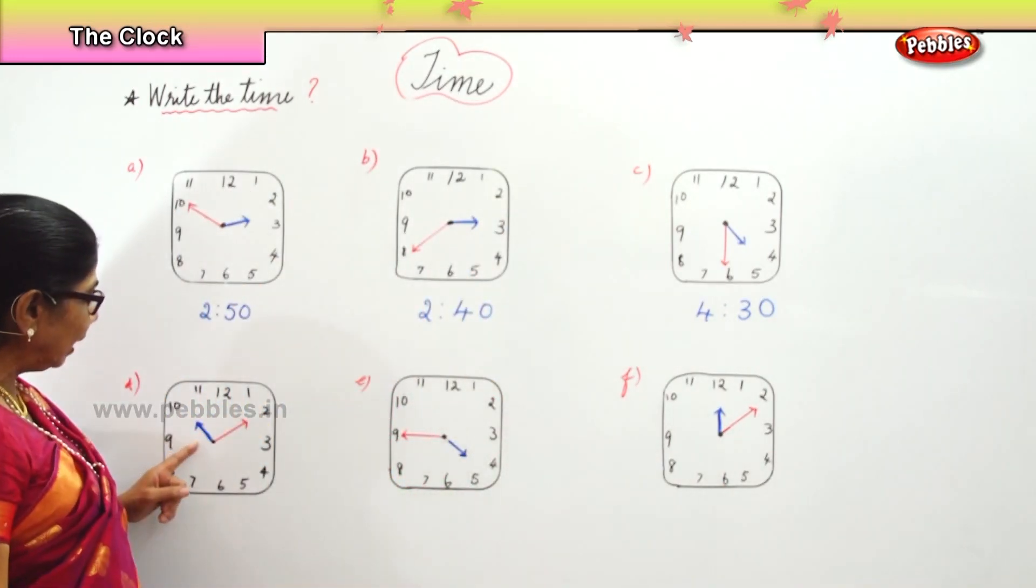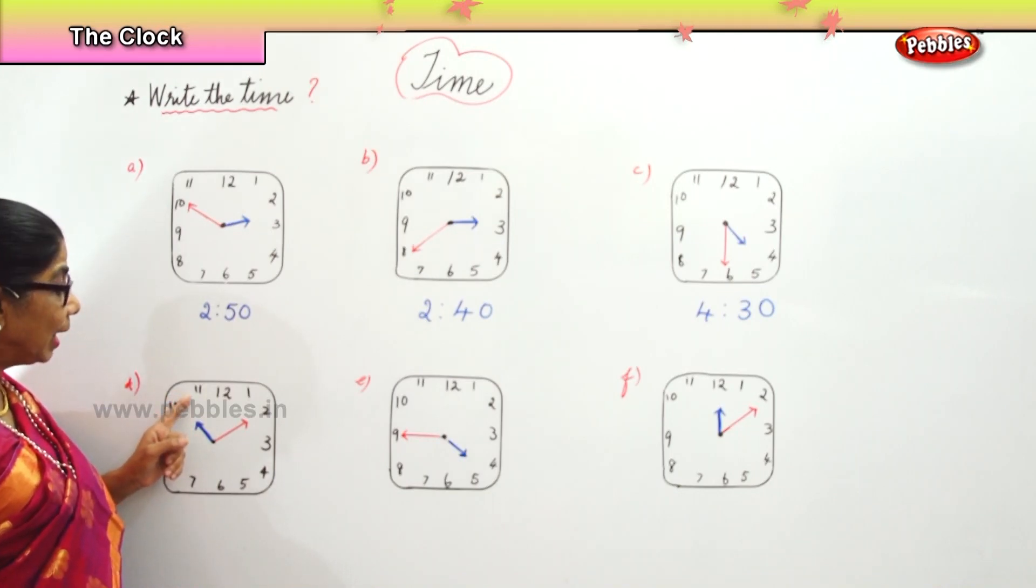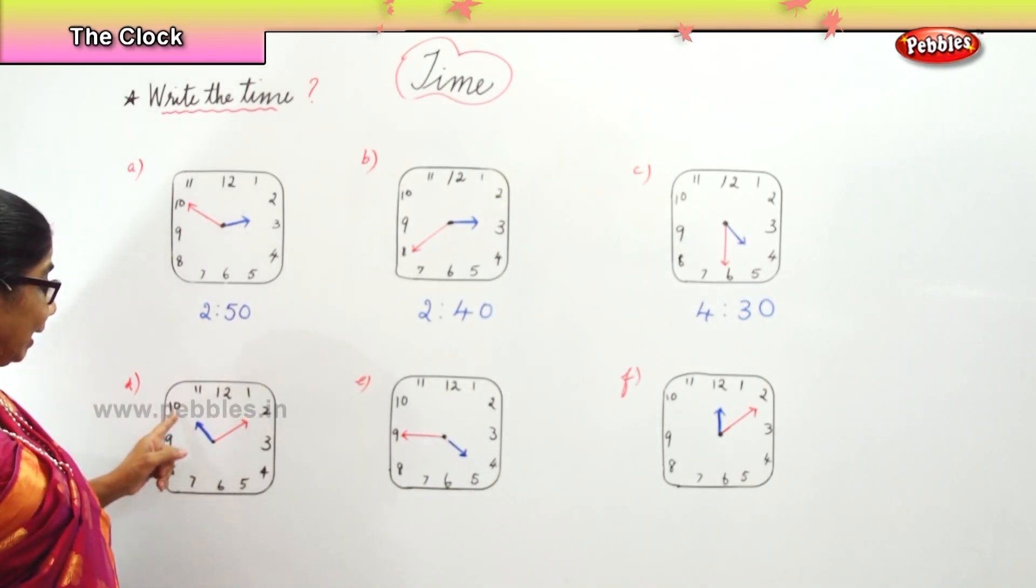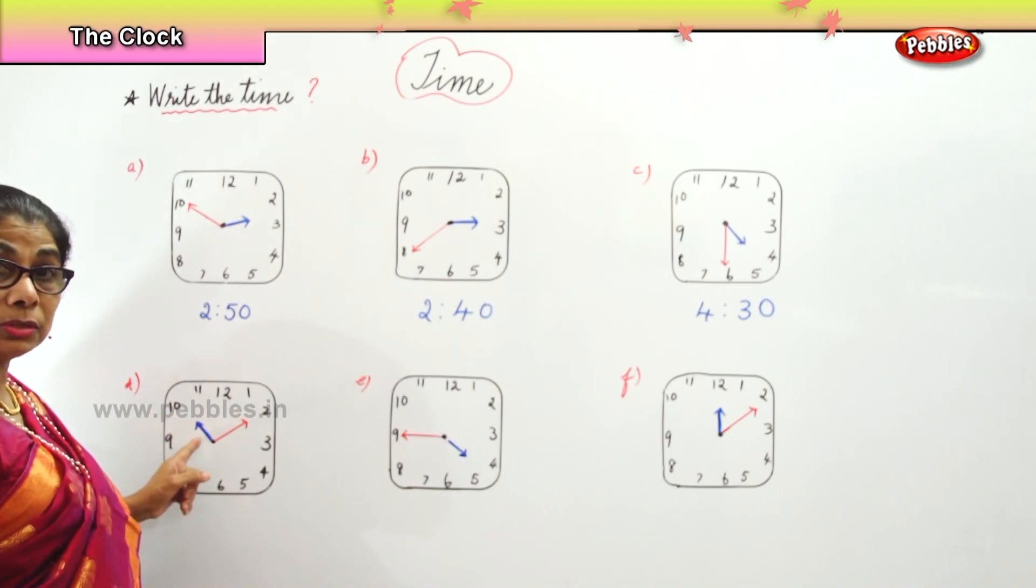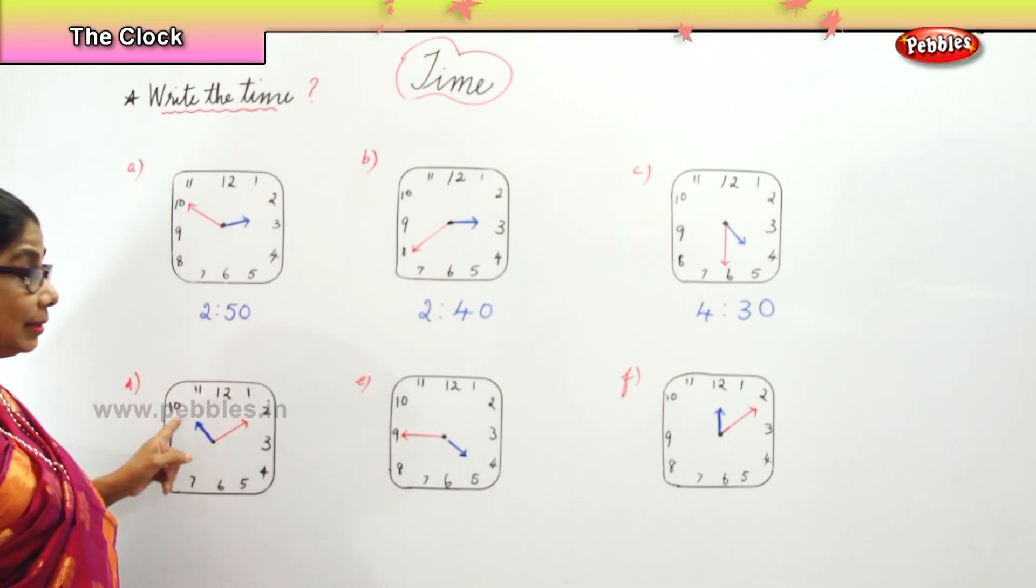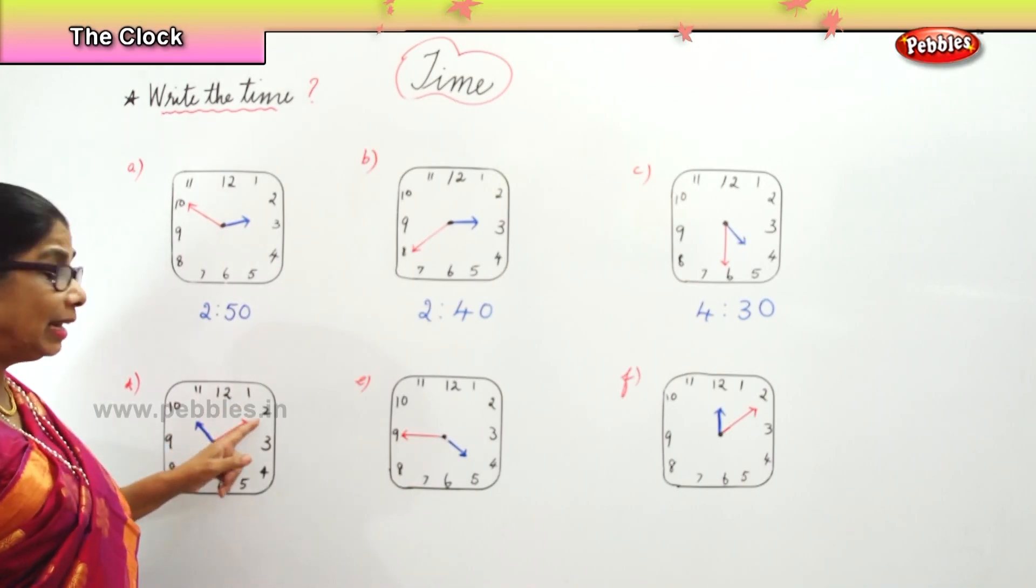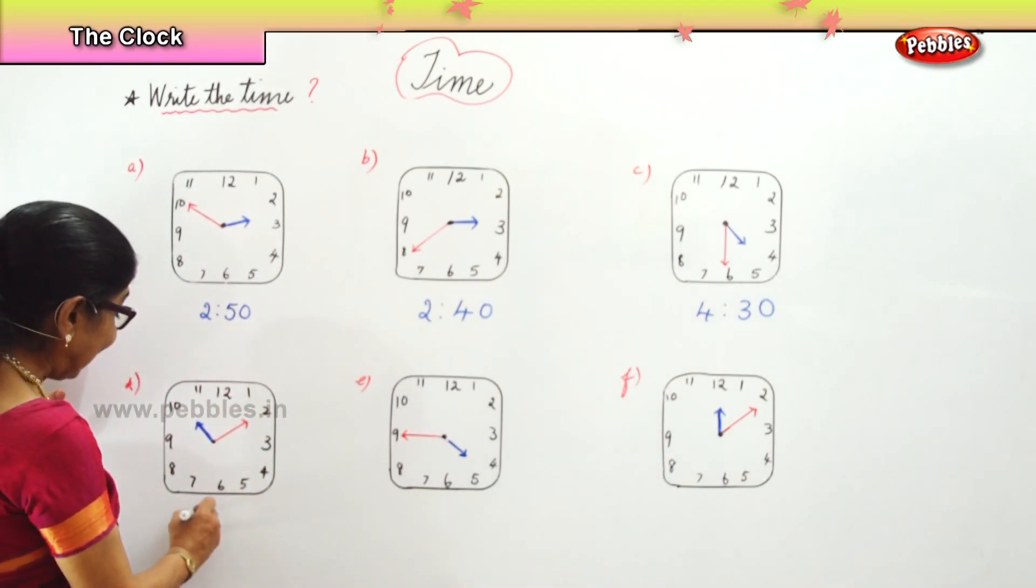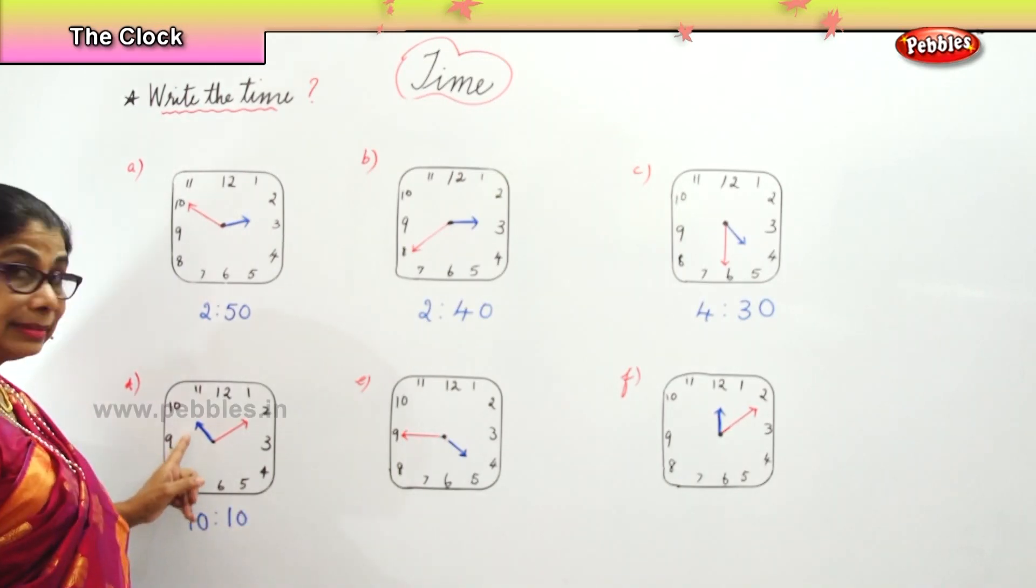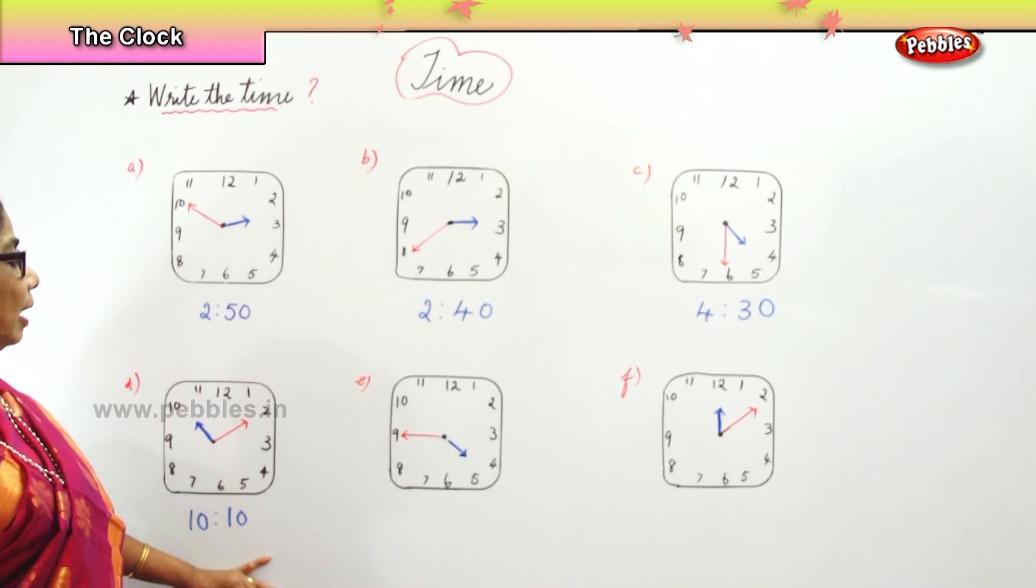Now you have here another clock face. The hour hand points between ten and eleven and the minute hand is on two. So you will say it is almost near ten. So how many minutes past ten? Five, ten. So you will say ten minutes past ten. Ten minutes past ten, that is ten ten. Ten o'clock and past ten minutes, so ten minutes past ten.